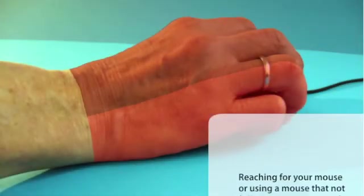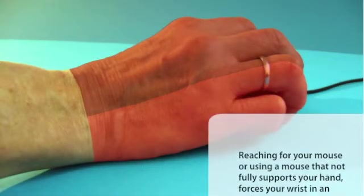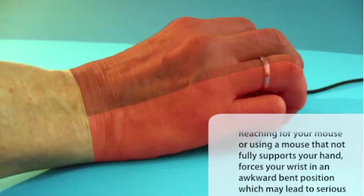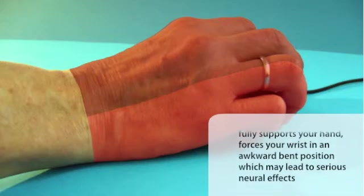Reaching for your mouse or using a mouse that does not fully support your hand forces your wrist into an awkward bent position, which may lead to serious neural effects.